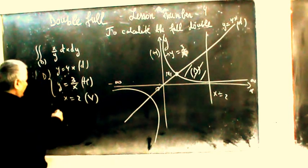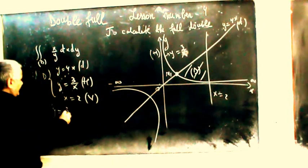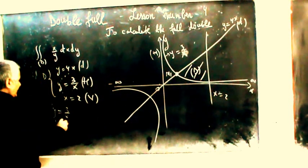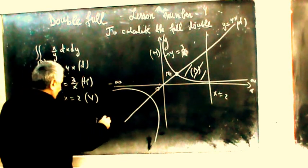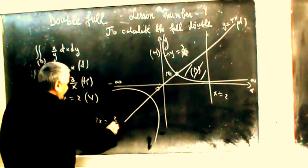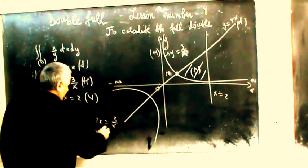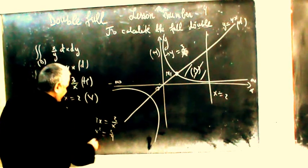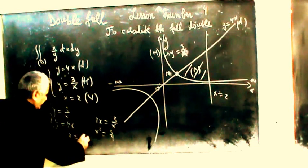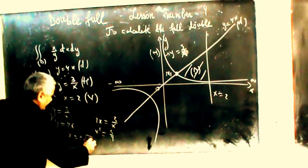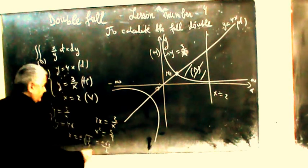Finding intersection point m1: set y equal to 3/x equal to 4x. Then 4x equal to 3 divided by x, so x squared equal to 3 divided by 4, giving x equal to plus or minus radical of 3 divided by 4, which is plus or minus radical 3 divided by 2.